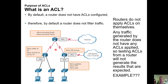An access control list cannot be applied to filter that type of traffic. For example, we've talked about RIP and OSPF. With OSPF, routers are learning about their neighbors by sharing hello packets. An access control list will not affect the communication that routers have with each other.